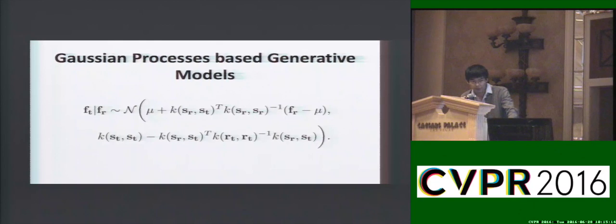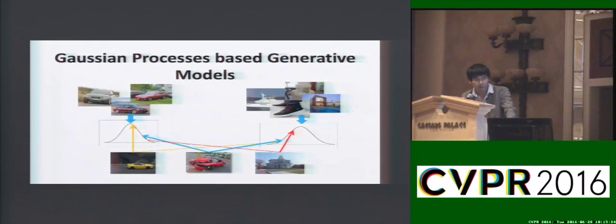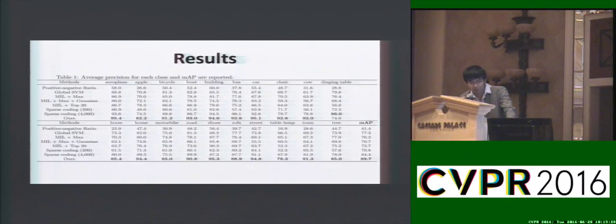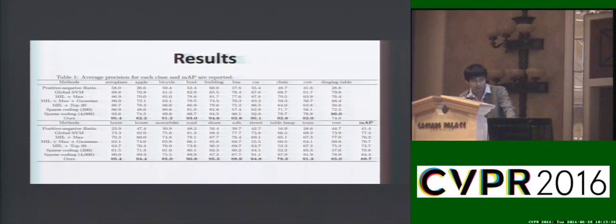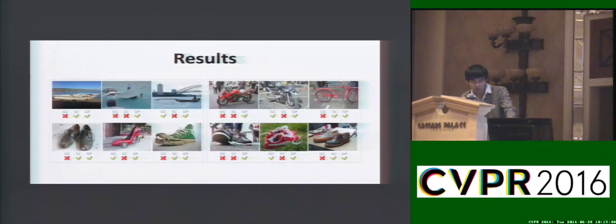Once the generative models are built, we can test the unusualness of an image by fitting these two Gaussian models. Finally, we conduct experiments on a new large dataset constructed for these tasks, and both quantitative results and qualitative results show the advantage of our method.